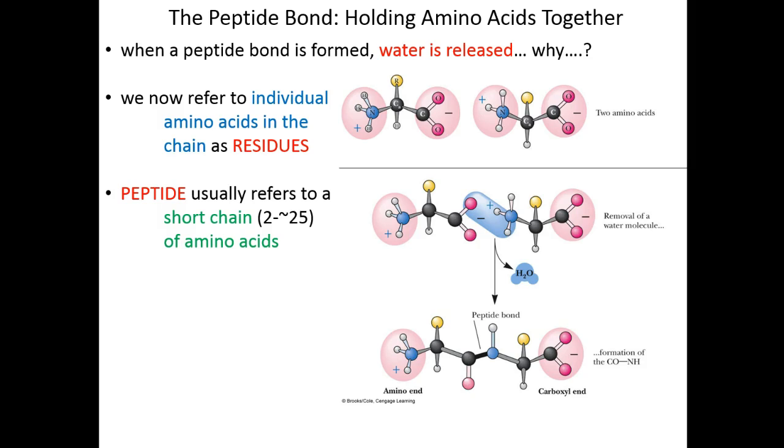We reserve the term peptide for short chains of amino acids, from two to about two dozen amino acids in length. We use the word proteins for anything larger. Proteins are very long chains starting in the hundreds and going as long as tens of thousands of amino acids—single continuous chains up to the tens of thousands.